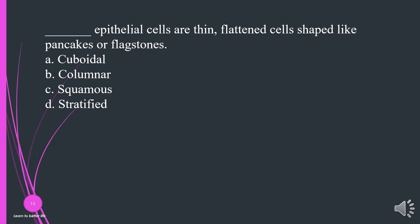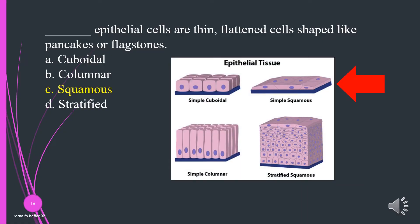What epithelial cells are thin, flattened cells shaped like pancakes or flagstones? A. Cuboidal. B. Columnar. C. Squamous. D. Stratified. The answer is C, squamous.